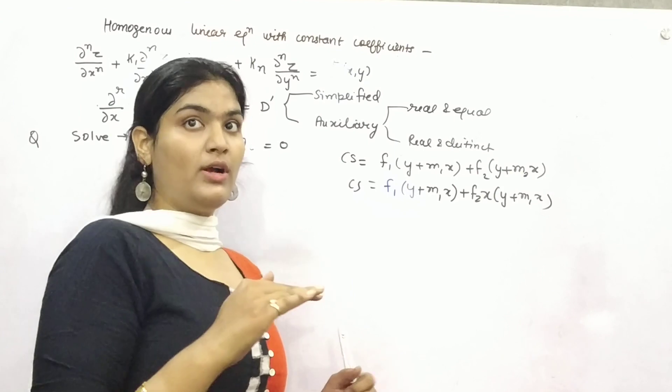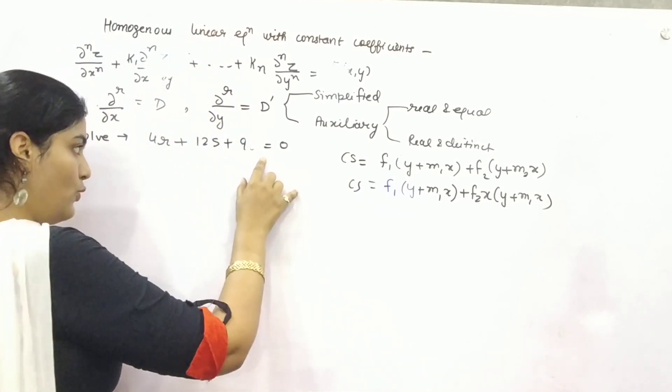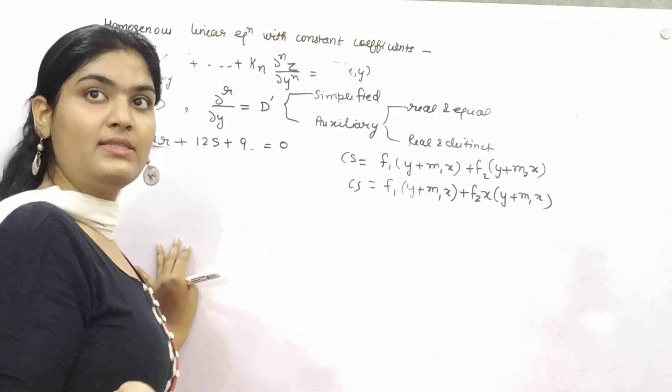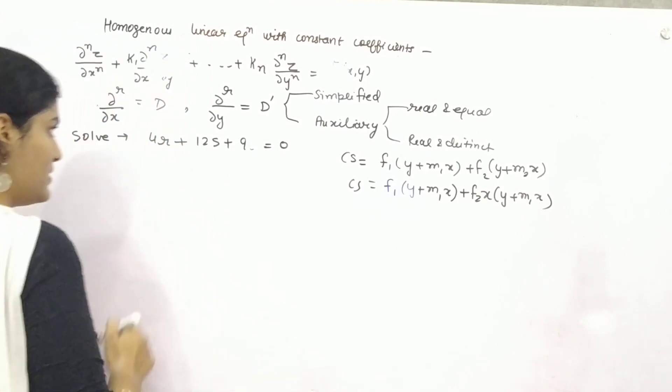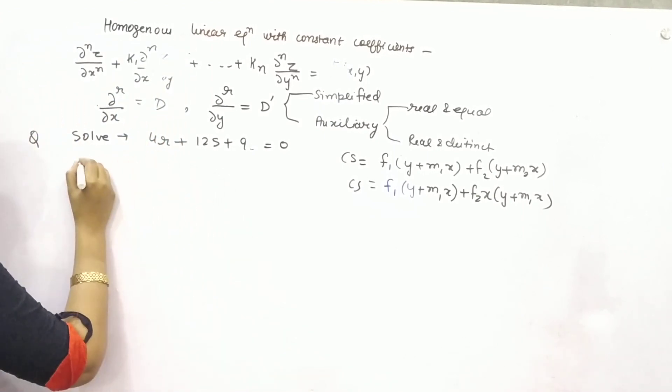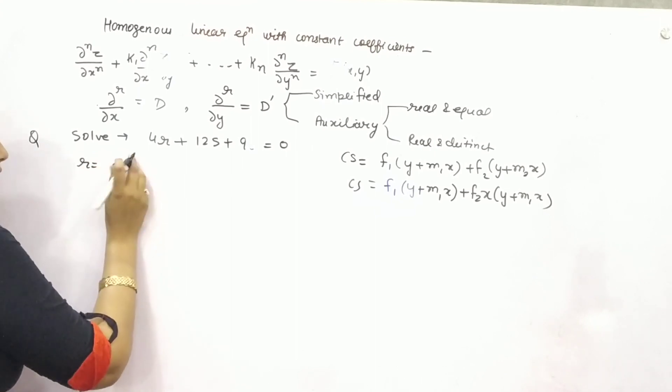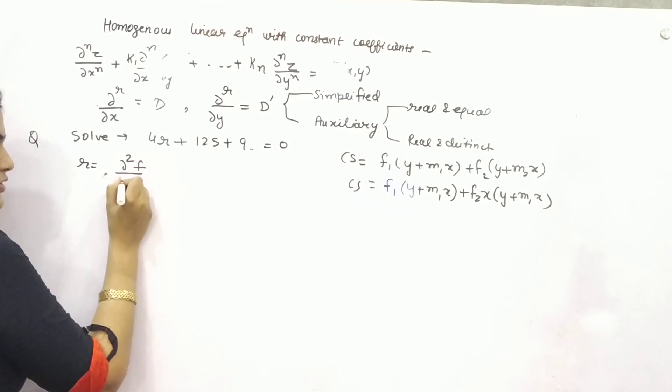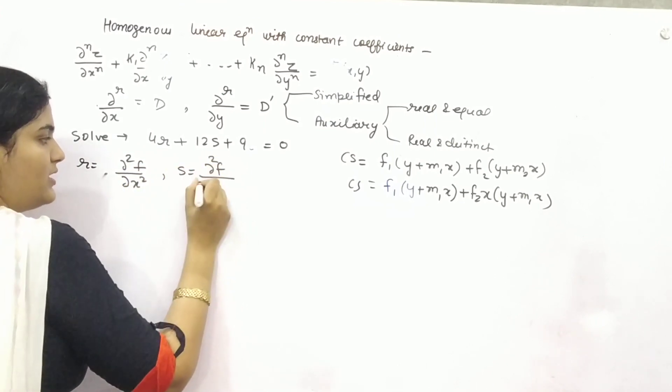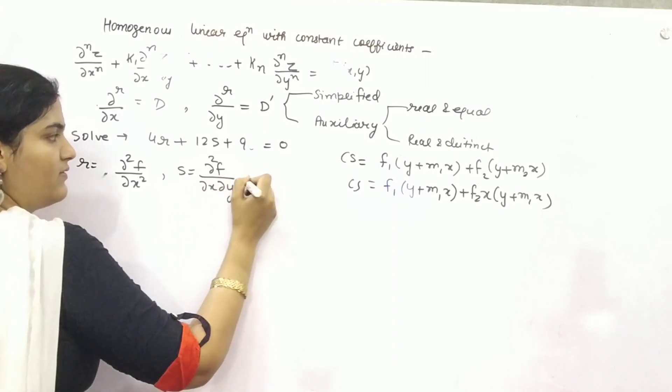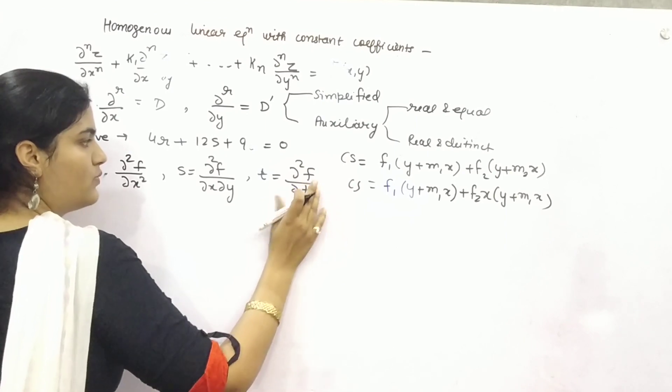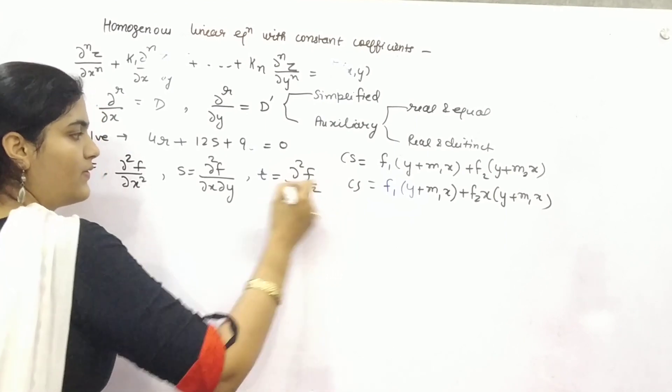I am talking about equations whose value on right hand side is 0. Let us solve this. You know that r is double partial differentiation of function with respect to x. S is double partial differentiation with respect to both x and y. And t is double partial differentiation with respect to y.